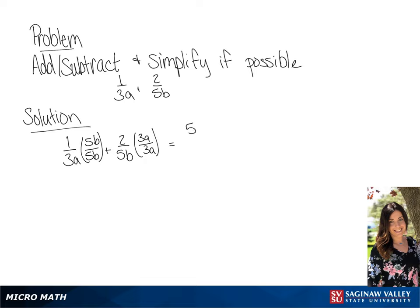This is going to give us 5b over 15ab plus 6a over 15ab. Our final answer is going to be 5b plus 6a, all over 15ab.